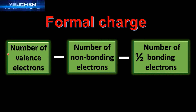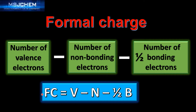The formal charge is the number of valence electrons in the atom minus the number of non-bonding electrons minus half the number of bonding electrons. An easy formula to remember is: FC equals V minus N minus half B — number of valence electrons minus number of non-bonding electrons minus half the number of bonding electrons.